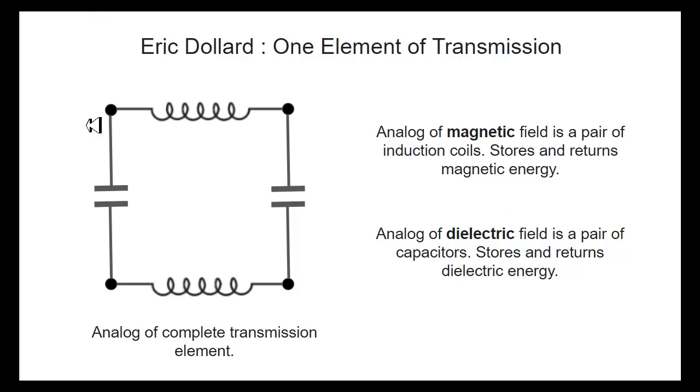So Eric Dollard refers to this as one element of transmission. So this is the analog of a complete transmission. So this is one element of a transmission line. And he says that the analog of the magnetic field is a pair of induction coils. And the induction coils store and return magnetic energy. And the analog of the dielectric field is a pair of capacitors. And the capacitors store and return dielectric energy.